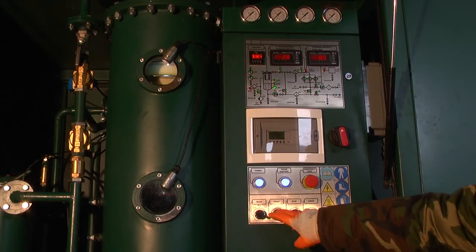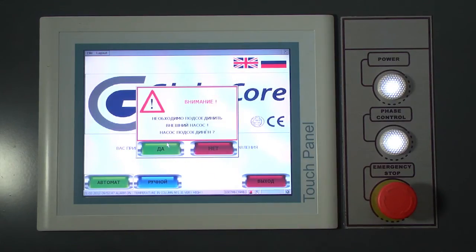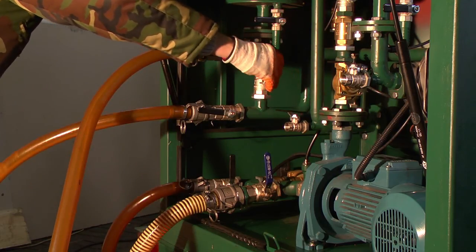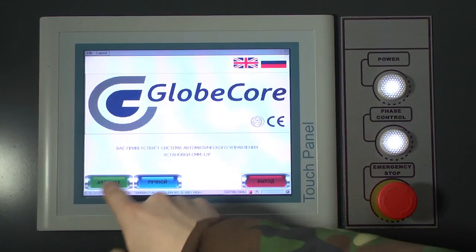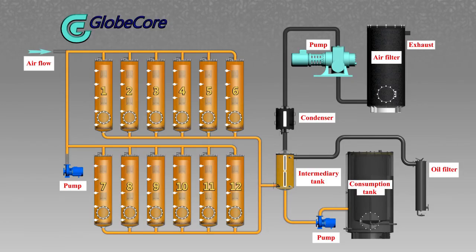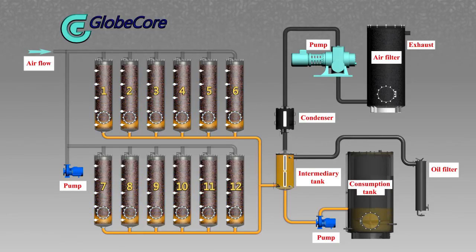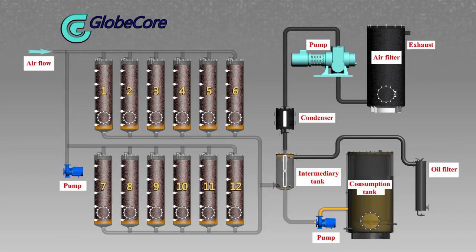After start, the units operate automatically with all process parameters adjusted by the automation system. When sorbent reactivation is required, the bypass line is closed and the operator initiates the sorbent reactivation process. The output pump drains the oil from sorbent columns and puts it into the buffer tank. After the columns are completely drained, the vacuum pump starts, creating airflow for the columns. Then the sorbent surface heater switches on. Sorbent reactivation starts and all absorbed decomposition products are extracted. When the reactivation process starts, the heating system switches off.